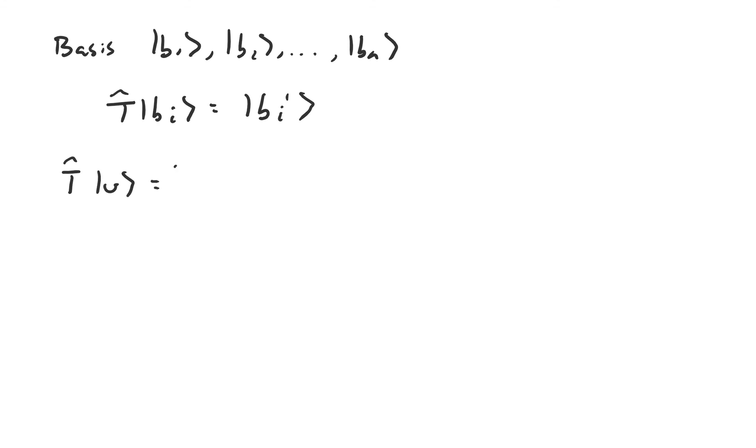Because |v⟩ is in the space, we can express it as a linear combination of these basis vectors: |v⟩ = α₁|b₁⟩ + α₂|b₂⟩ + ... + αₙ|bₙ⟩.